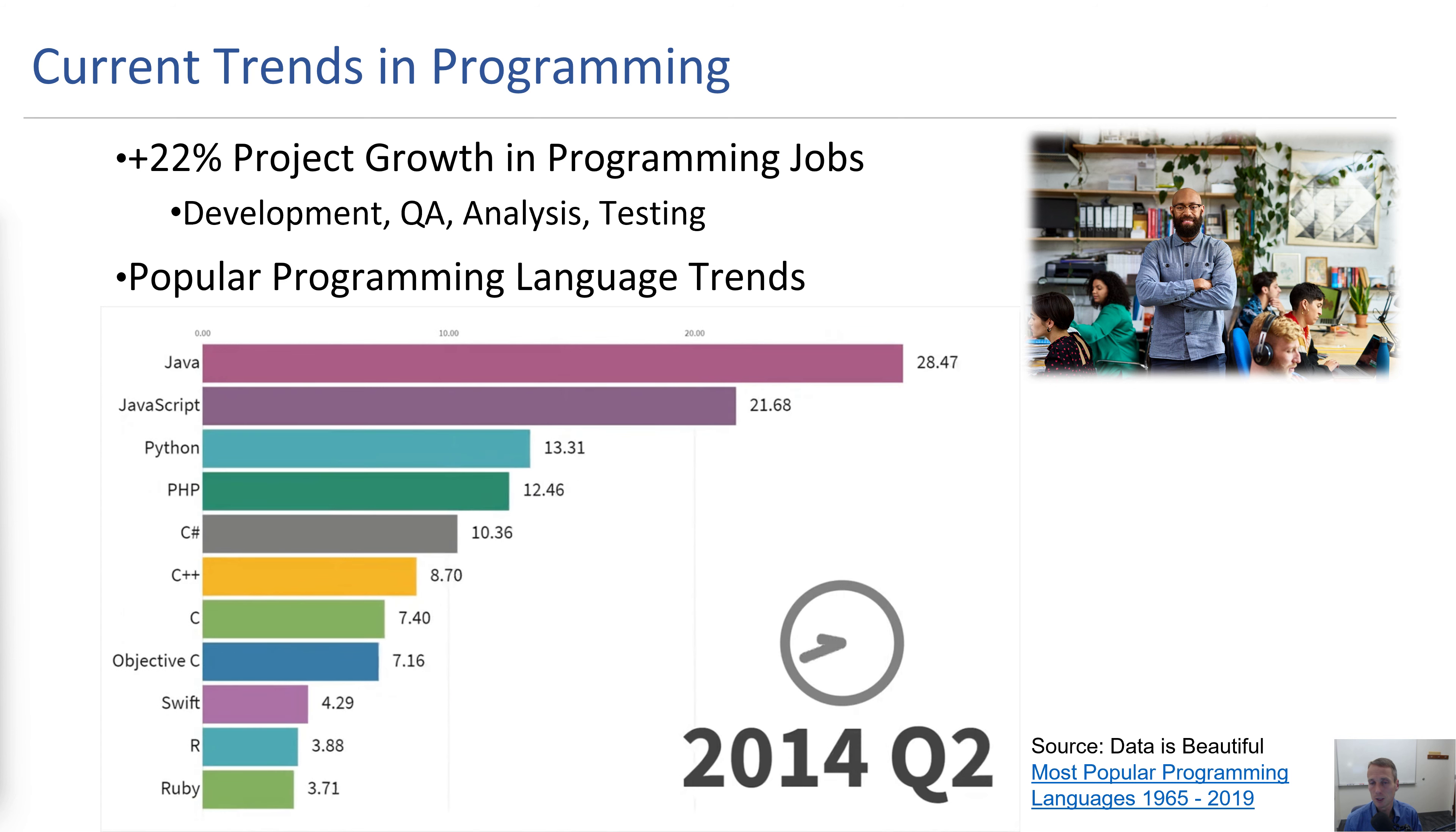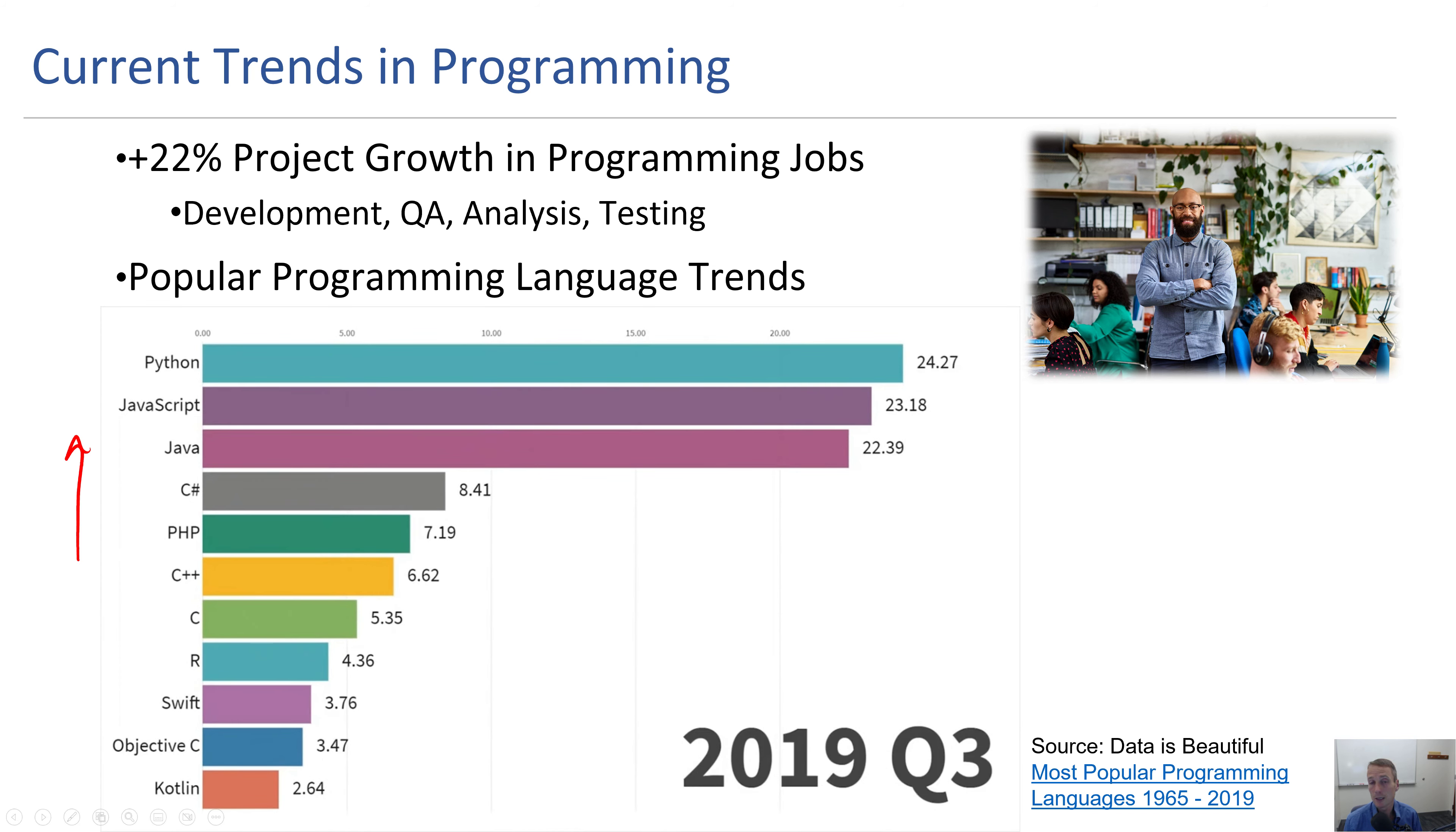You see Python emerge here and you could see Python moving up this list. By 2019 Python is at the top with some of the other popular ones such as JavaScript, Java, C sharp.